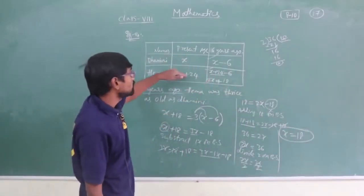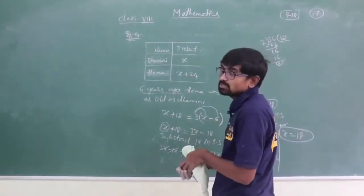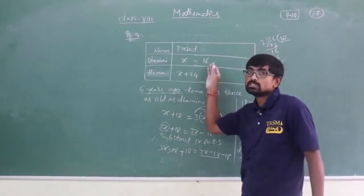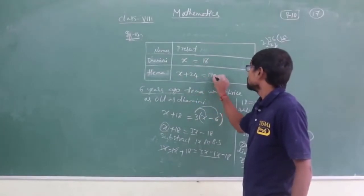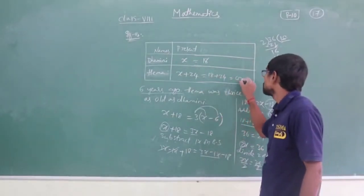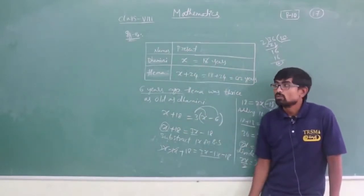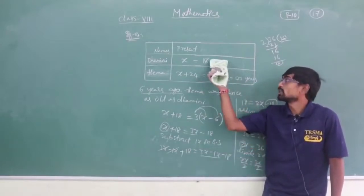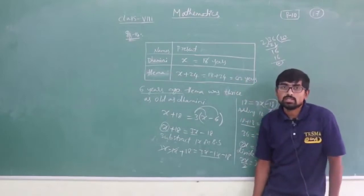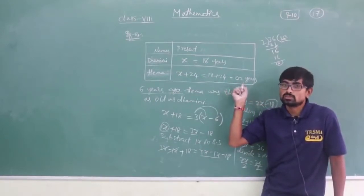X equals 18. So Damini's present age is 18 years. Hema's present age is X plus 24, which is 18 plus 24 equals 42 years. If you subtract both, you get 24 — because Hema is 24 years older than Damini. So Damini's age is 18 years and Hema's age is 42 years.